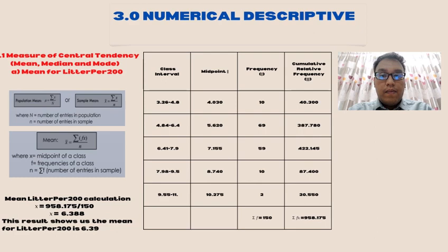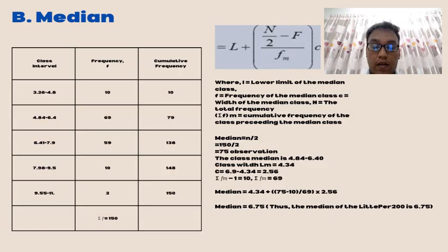3.0, numerical descriptive. 3.1, measure of central tendency - we use mean, median and mode. The first one is mean for liter per 200. This result shows us the mean for liter per 200 is 6.39.